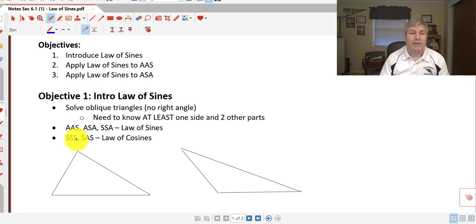If we have three sides, or two sides and an included angle, side-angle-side, we'll use the law of cosines. We'll cover the law of cosines in a future video. We'll also cover side-side-angle, or the ambiguous case of law of sines in a future video. In this video, we're just going to apply the law of sines to angle-angle-side and angle-side-angle.